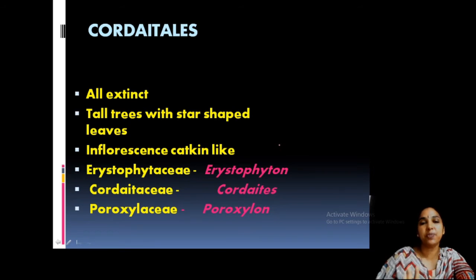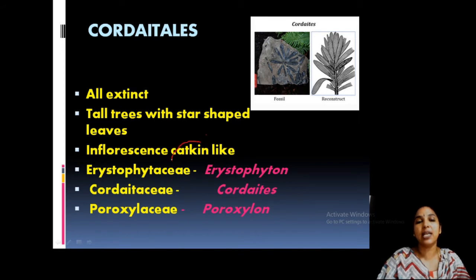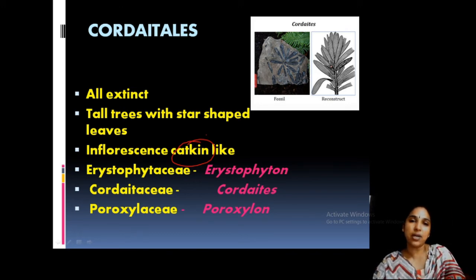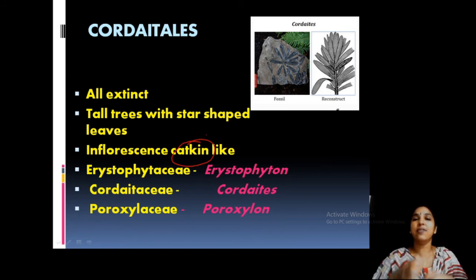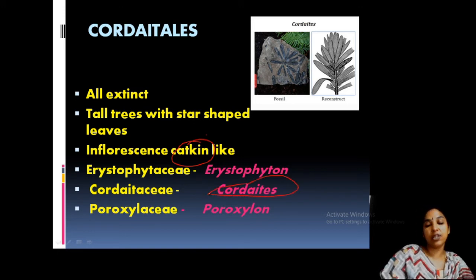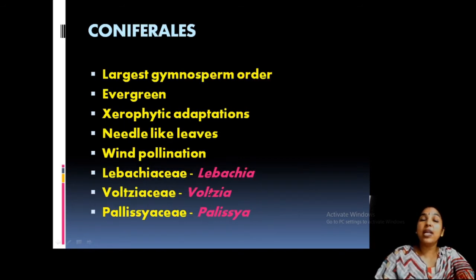Cordaitales is a completely fossilized, extinct form. Members have star-shaped leaves — that is a peculiar feature — and also catkin-like inflorescence. Cordaitis is a member, reconstructed from fossil parts. Families include Arystophytaceae, Cordaitaceae, and Poroxylaceae. Only Cordaitaceae has one member studied for practical, not theory.